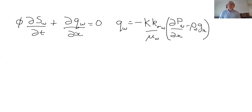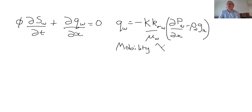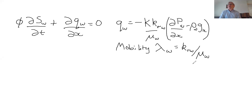For elegance, I'm going to define a mobility lambda. This is maybe a little bit different from some textbooks that include permeability, but the way I'm going to write it is just the relative permeability divided by the viscosity. That just saves me having to write too much whenever I write a relative permeability, since it's always divided by viscosity.